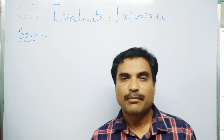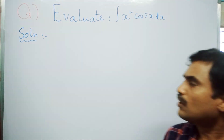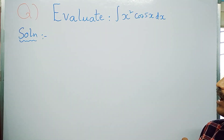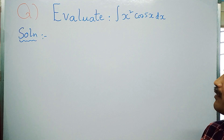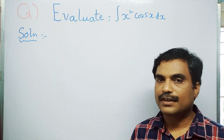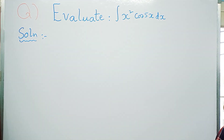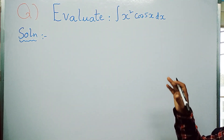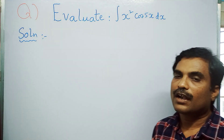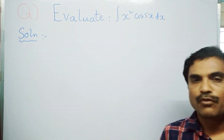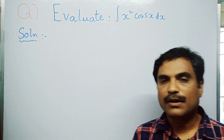The problem is: evaluate the integral of x² cos 5x dx. To solve this problem, first observe that the integrand consists of two functions — x² and cos 5x — so it is of the form x^m cos(nx) dx.